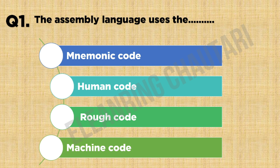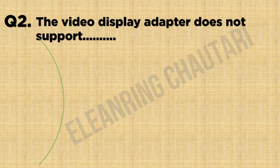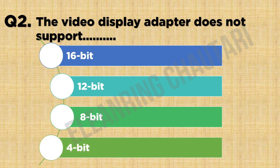Missing Quote. The video display adapter does not support the deck. Option A: 16-bit. Option B: 2-bit. Option C: 8-bit. Option D: 4-bit. The video display adapter does not support the deck — 16-bit, 2-bit, 8-bit, 4-bit. The answer is Option B: 2-bit.